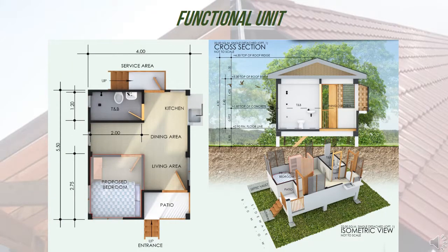The functional unit for the study was a roof structure designed for a 22 square meter single detached NHA standard housing model. The model house has a length of 5.5 m and a width of 4 m. It was assumed that this design was adopted for the construction of transitory shelter houses in Marawi City.